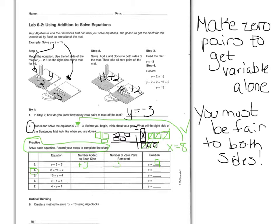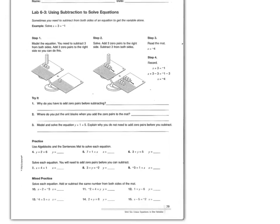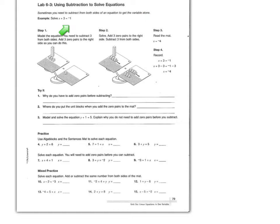The last step is to use subtraction to solve equations — we used addition in the last examples, now we use subtraction. Sometimes you need to subtract from both sides to get the variable alone. Solve: x plus three equals negative one. Model it with x on the left and three positives, and negative one on the right. To get x alone, make zero pairs by adding a negative three to both sides. Those cross out, and we are left with x equals negative four.